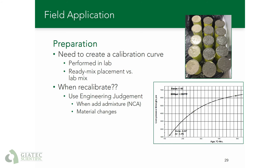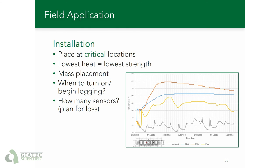For installation, you want to place the sensors at critical locations. The definition of critical will change depending on what you want to monitor. For a post-tension deck, that might be at the thinnest section, the last place poured, or perhaps a corner that is a little hard to protect — you always want to monitor a couple of different locations to identify the lowest value of strength. For a mass placement, critical locations would be at the center of mass and at the surface. As far as when to turn on and begin logging, it mostly depends on the system. Older systems would start calculating maturity as soon as logging began, while some newer sensors allow you to adjust the maturity after the fact, so you can turn them on as soon as the sensor is installed.